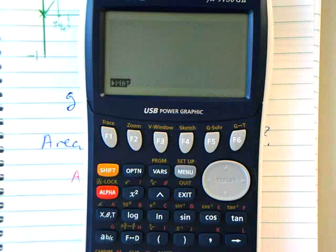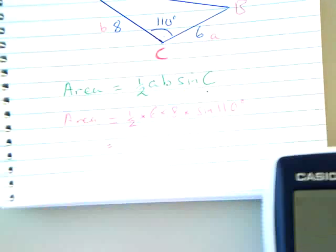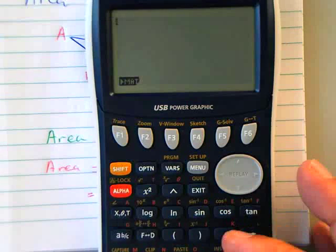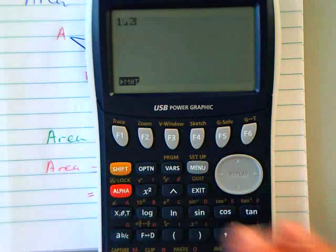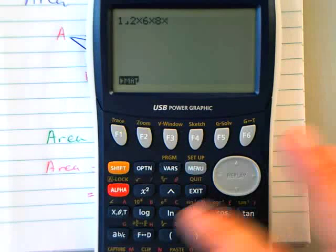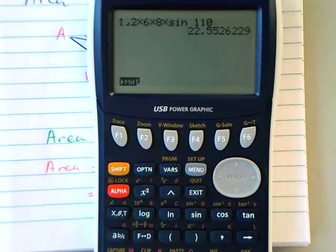So then you can just press the blue button on the bottom and now remembering my question a half a b sine c, one half times 6 times 8 times sine 110, you're going to quite literally type that in. So you're going to go one half times by 6 times by 8 times by sin 110.